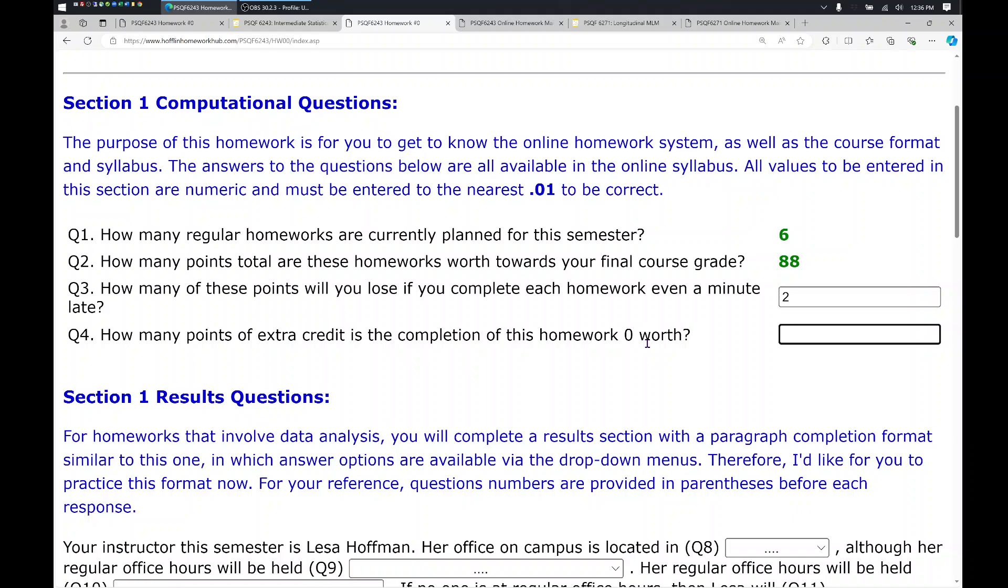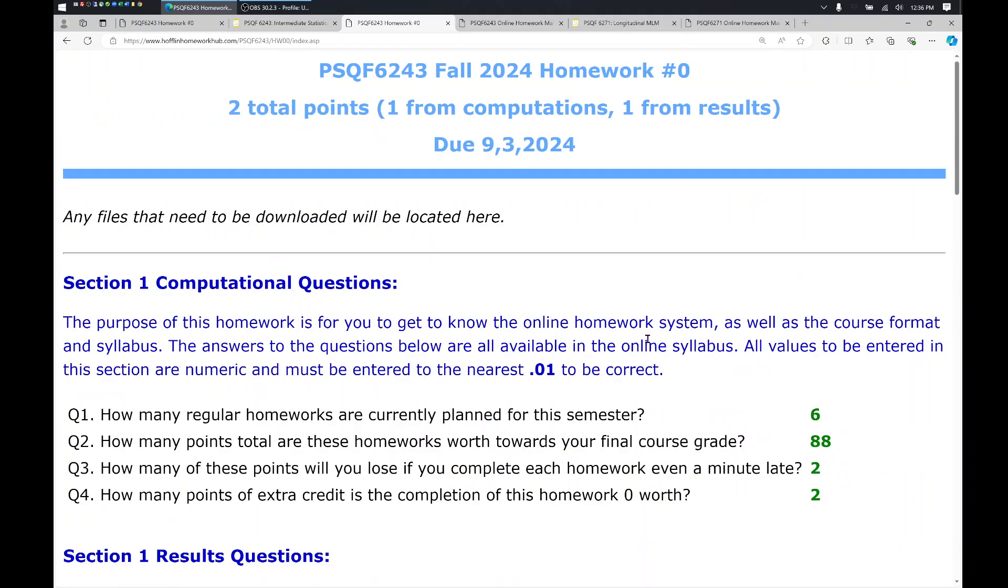However, how many points of extra credit are you earning right now by completing this assignment? Also 2. So essentially, you do this to check the system so I know that everyone knows how to access it and make it work. And you get essentially a free late homework in exchange for doing so. So you can enter as many of these values at a time as you want. I'm going to hit Enter to make them checked.